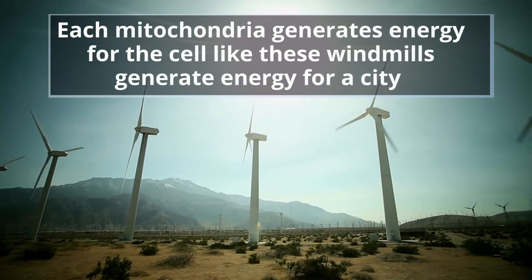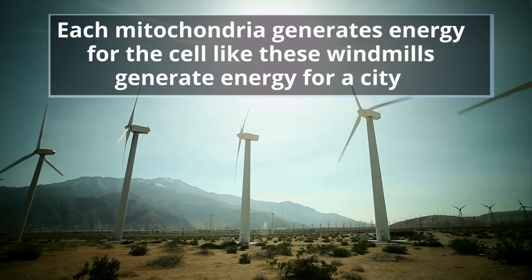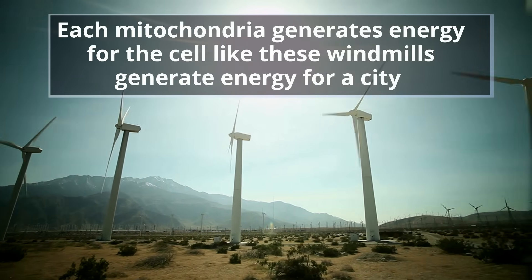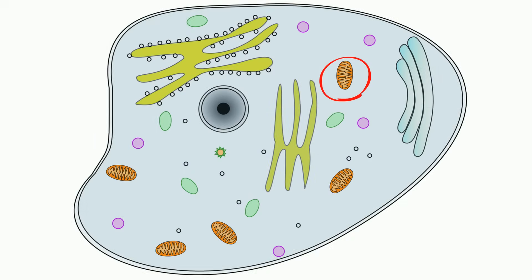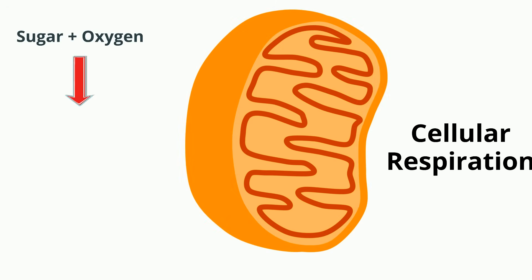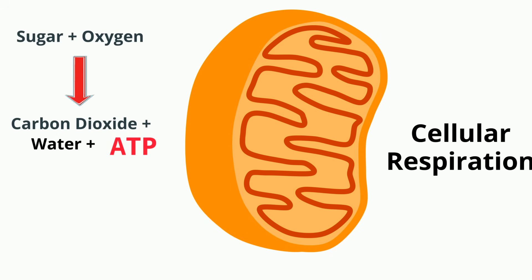Here's how it works in basic terms. At the mitochondria, the sugar combines with oxygen to produce carbon dioxide, water, and energy in the form of ATP.